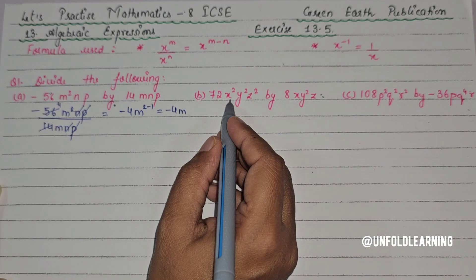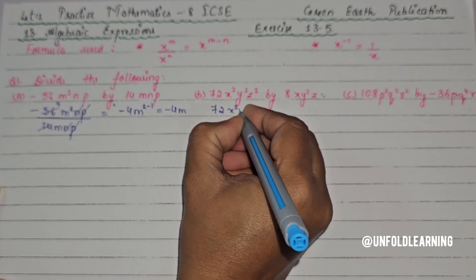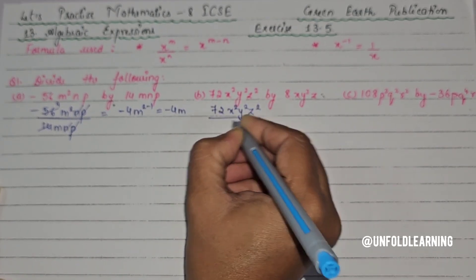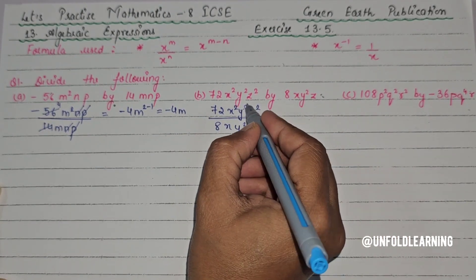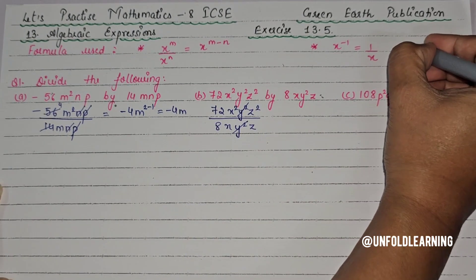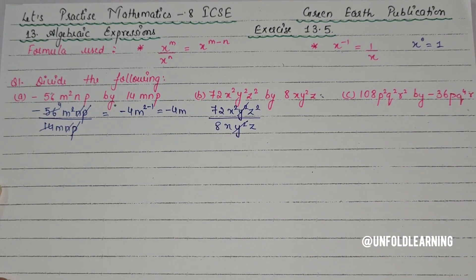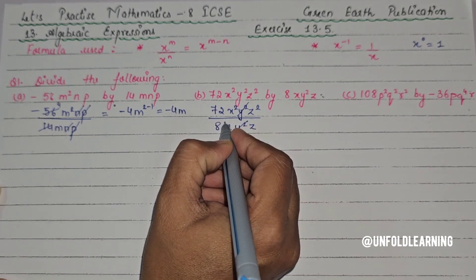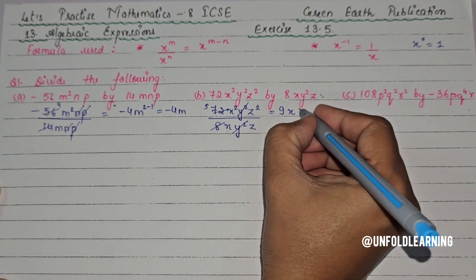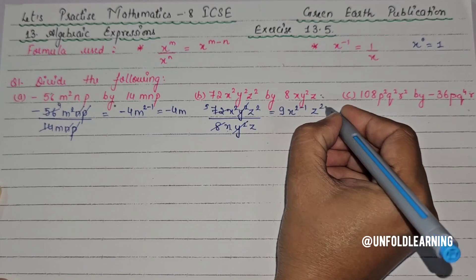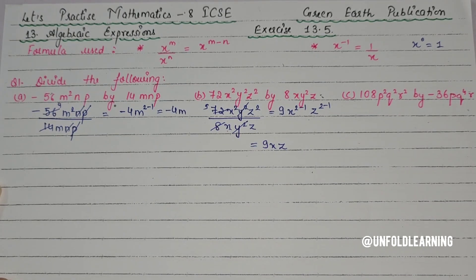Next we have 72 x squared y squared z squared divided by 8 x y squared z. We write 72 x squared y squared z squared upon 8 x y squared z. y squared cancels with y squared — anything to the power 0 is 1. 8 nines are 72, so 9 comes here. x to the power 2 minus 1 and z to the power 2 minus 1, so the answer is 9xz.